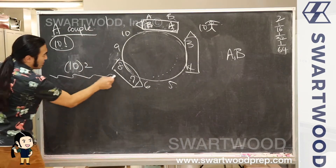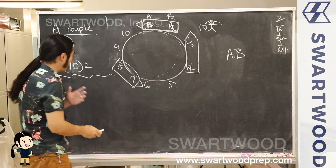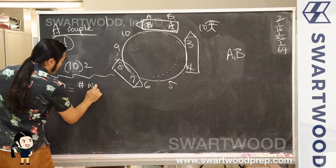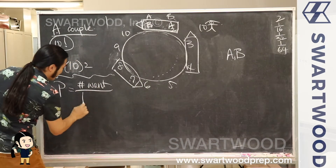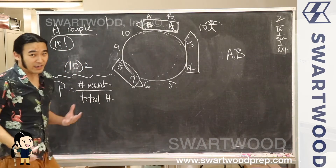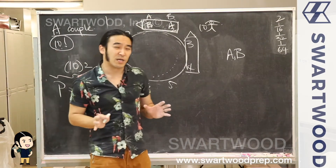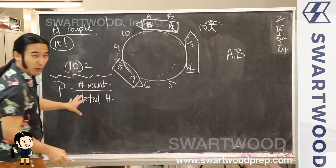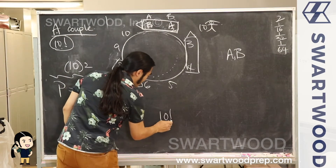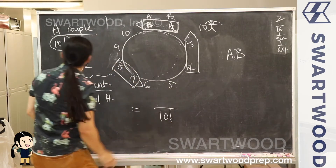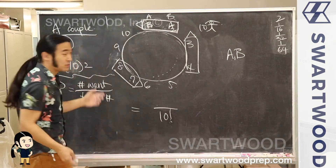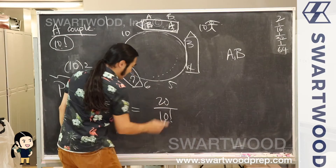Now we do our basic probability. The classic way of thinking about probability is the number of ways of getting what you want over the total number. If we think of all these possibilities as equally likely, this will work. So what are the total number of possibilities? There are 10 factorial possible setups. How many of them give us what we want? Apparently 10 times two, or 20 — so we get 20 on top.